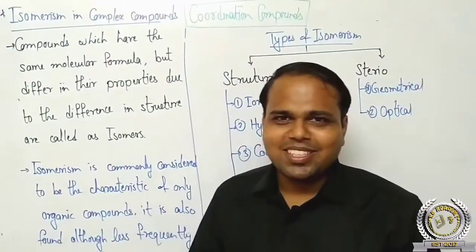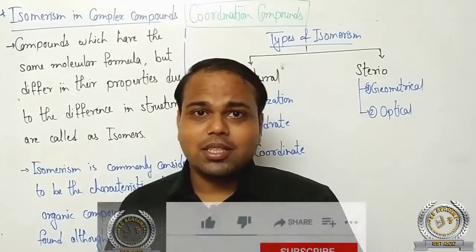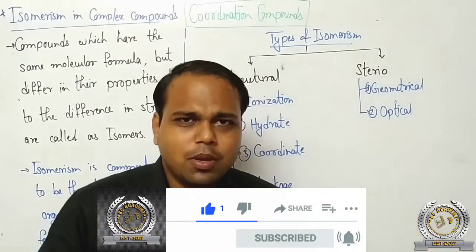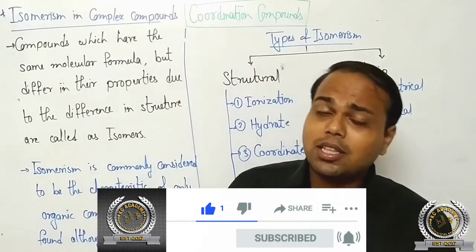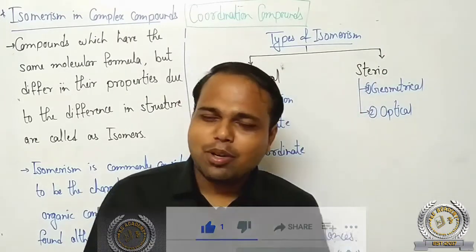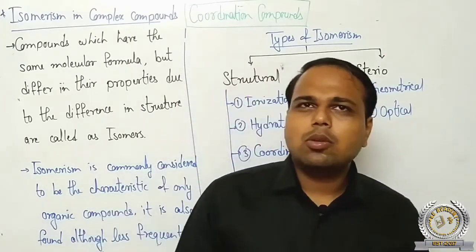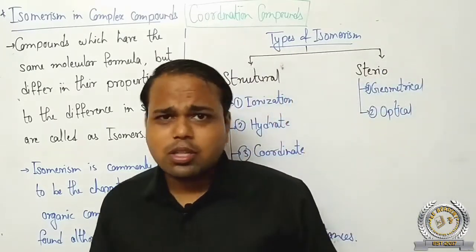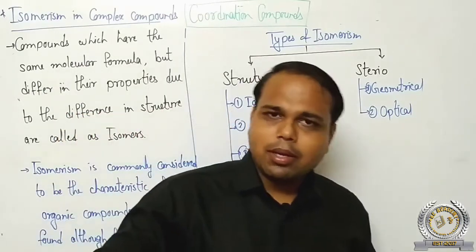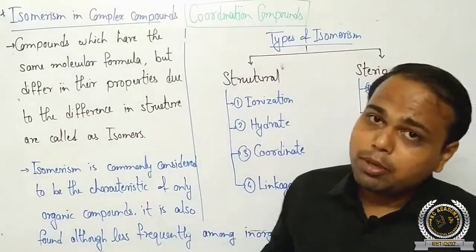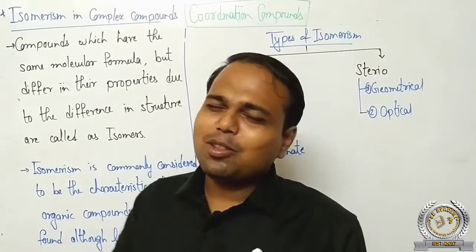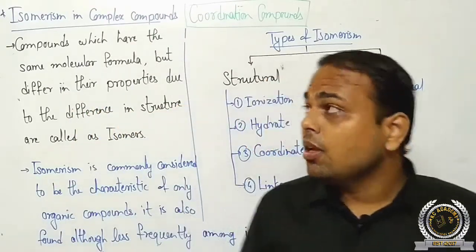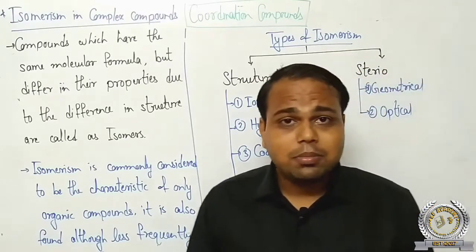Hello students, कैसे हैं आप लोग? I am Abhishek Saxena और हम लोग पढ़ रहे हैं Coordination Compound for Class 12. Last lecture में Nomenclature complete किया, Nomenclature की practice किया होगी, Beginner Box 1 और 2 complete हो गया है। आज हम एक simple topic से start करते हैं ताकि आप confused ना हों इस chapter से। Today's topic is Isomerism.